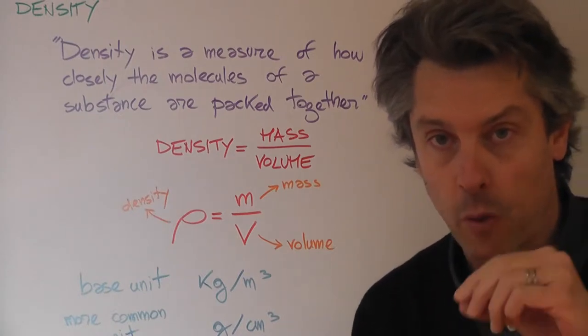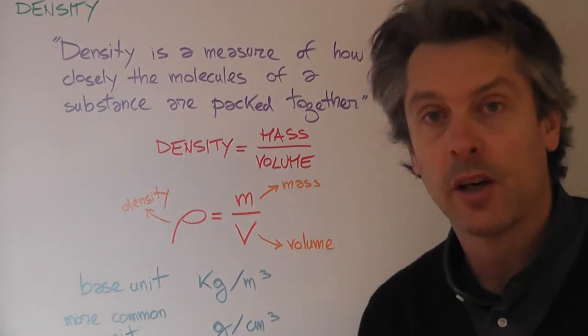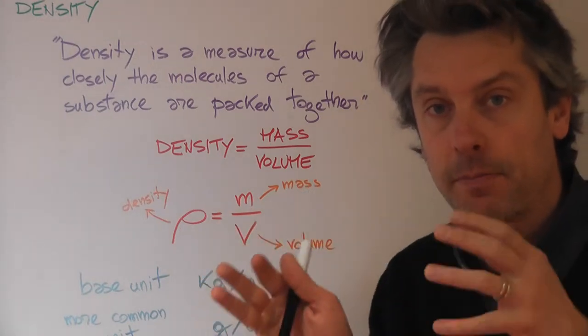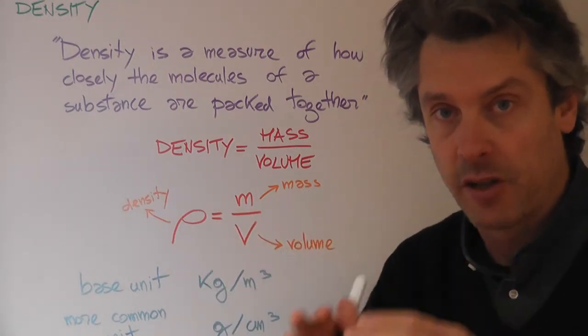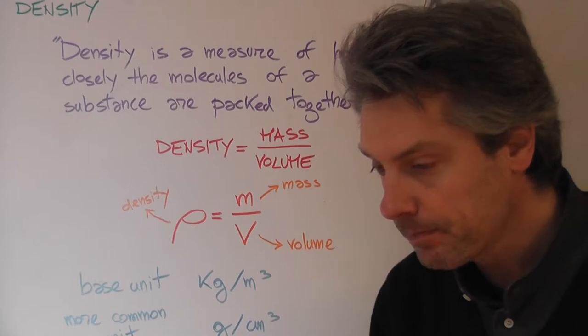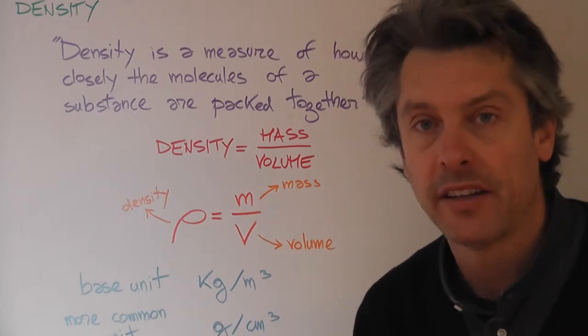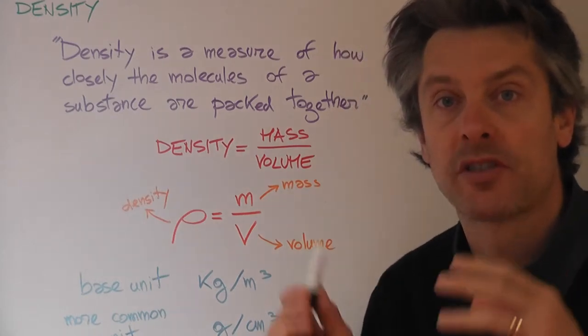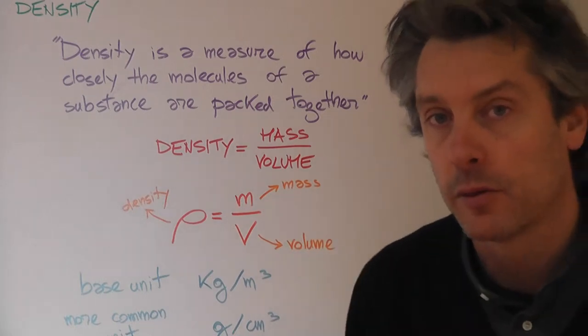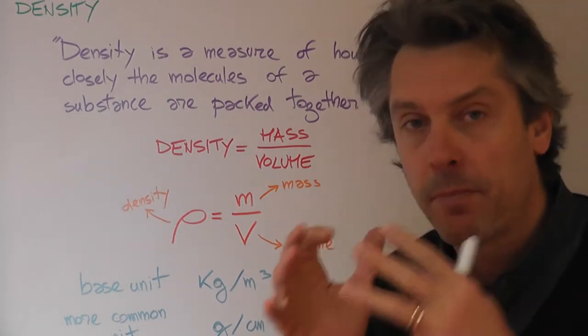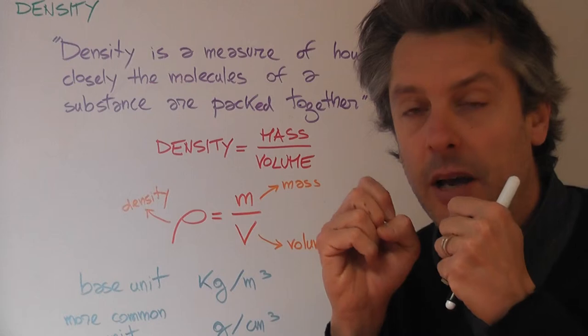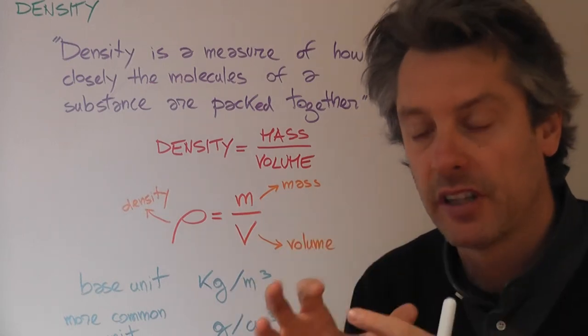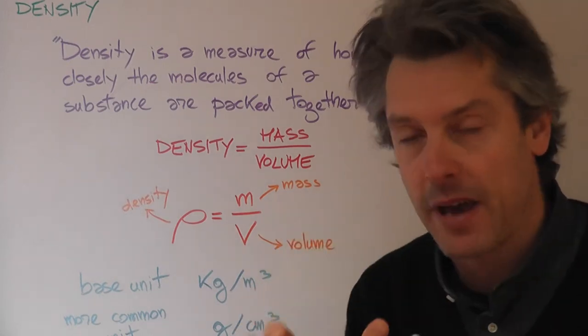Remember, we said previously that volume is how much space an object takes, so how big it is. Mass, on the other hand, is how much stuff, how many particles, what type of particles, and how they link together, and that gives you mass.